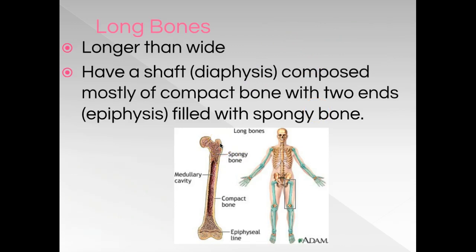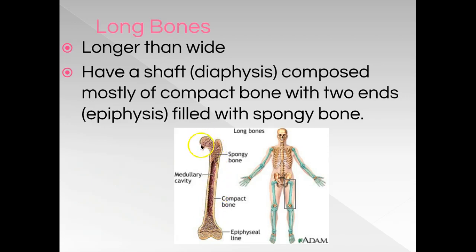Long bones are longer than they are wide — look at the femur, quite long in comparison to its width. You find long bones in your arms, legs, hands, and feet, but not your wrist or ankle because those are short bones. A characteristic of long bones is that the shaft is called the diaphysis, which is almost all compact bone. The epiphyses — the ends — are filled with cancellous tissue where we find bone marrow, with a thin layer of compact bone on the outside.